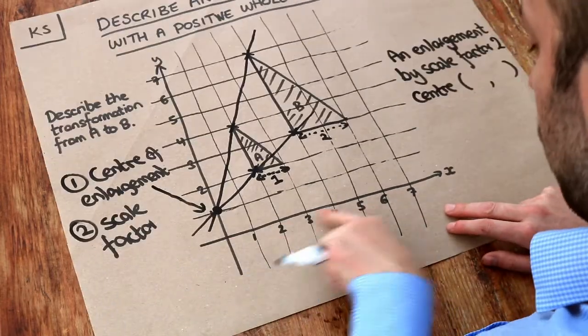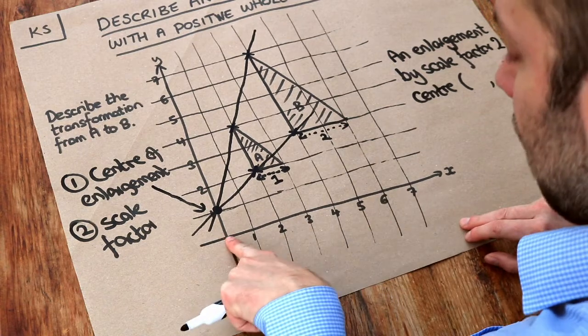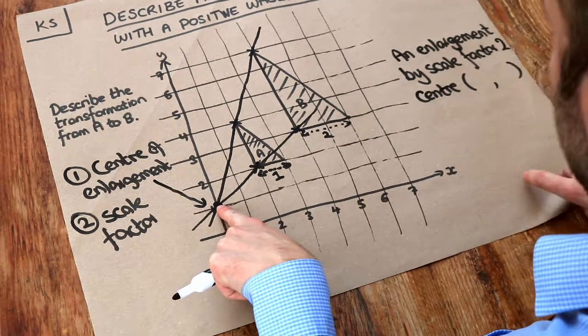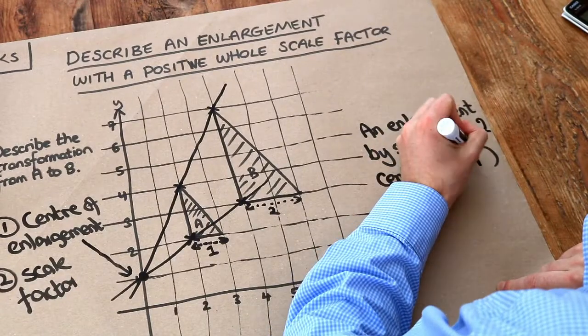And let's read off the coordinate. Well how far we're along the x-axis. Well we're zero across the x-axis. And we're one up the y-axis. So the center is zero, one.